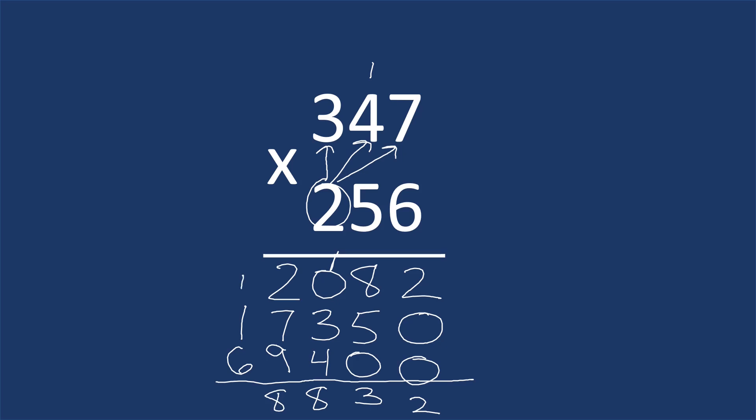We're going to do 1 plus 1 plus 6. This gives us 8. So the answer is 88,832. And that's how you multiply 3 digit numbers.